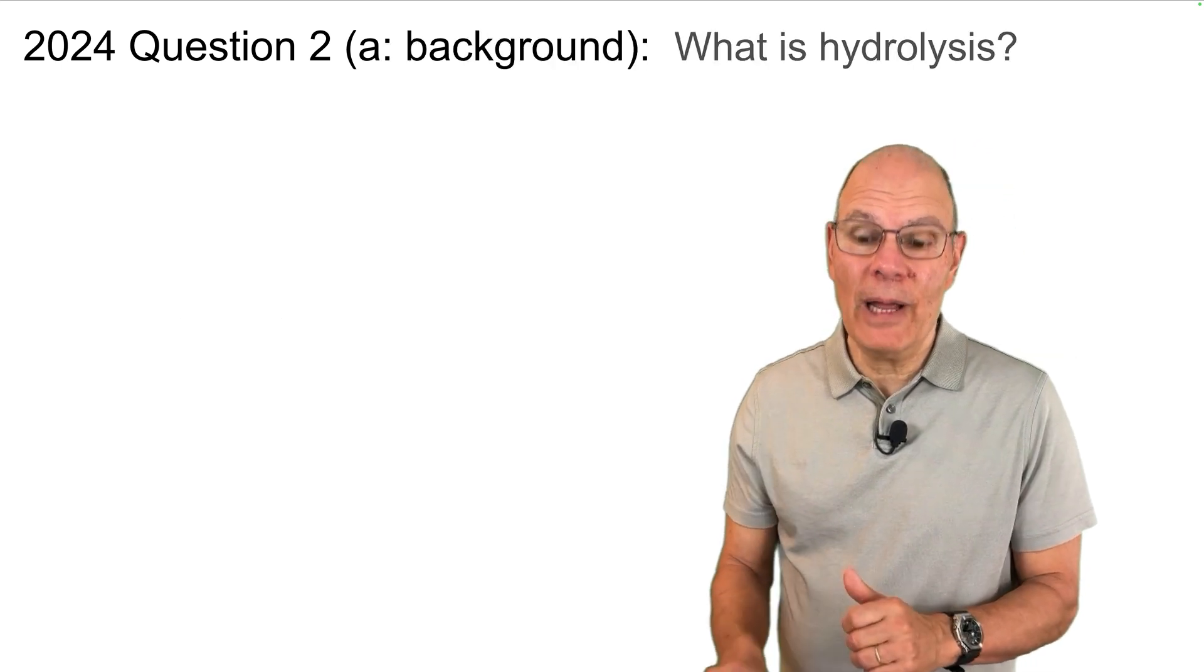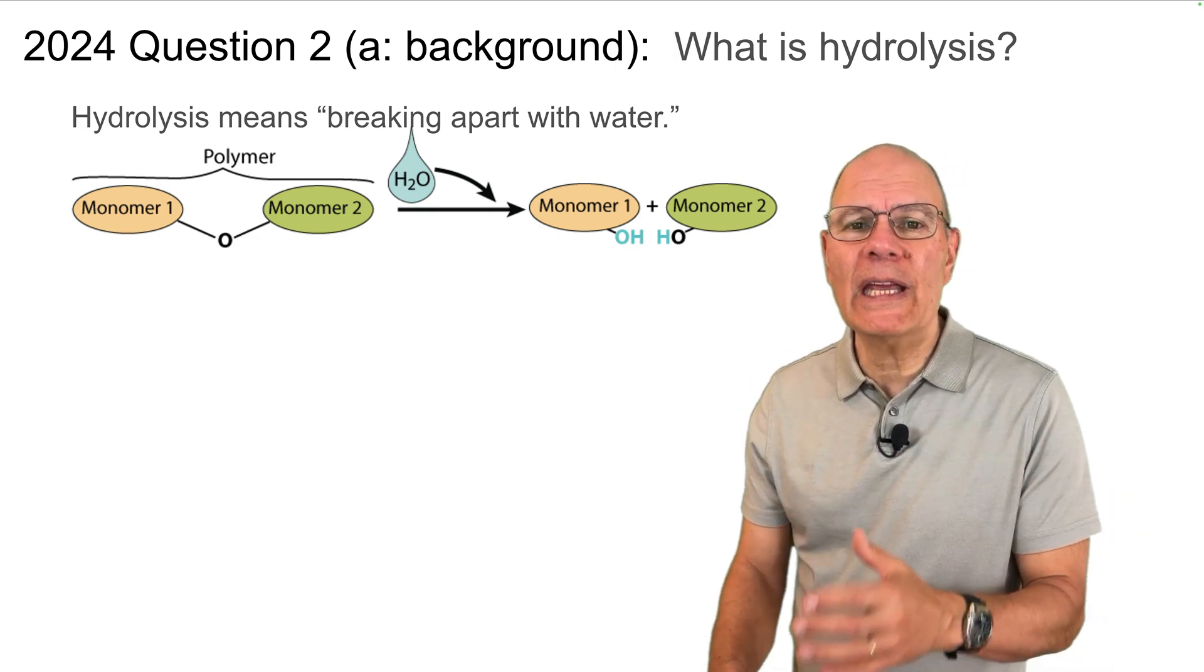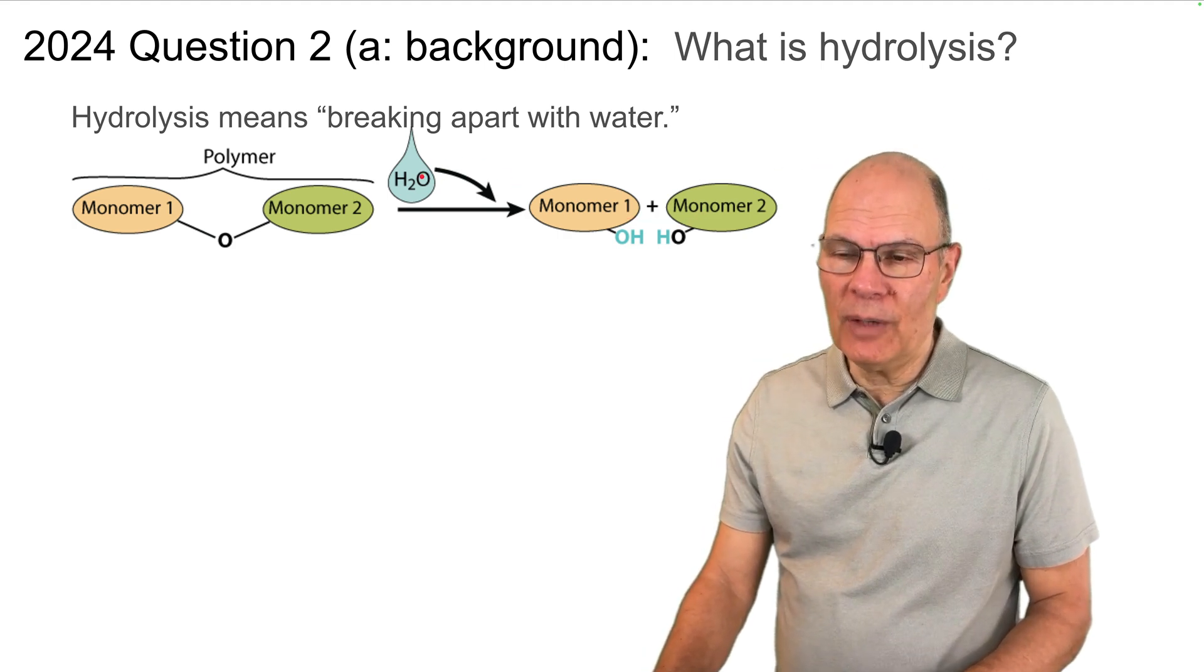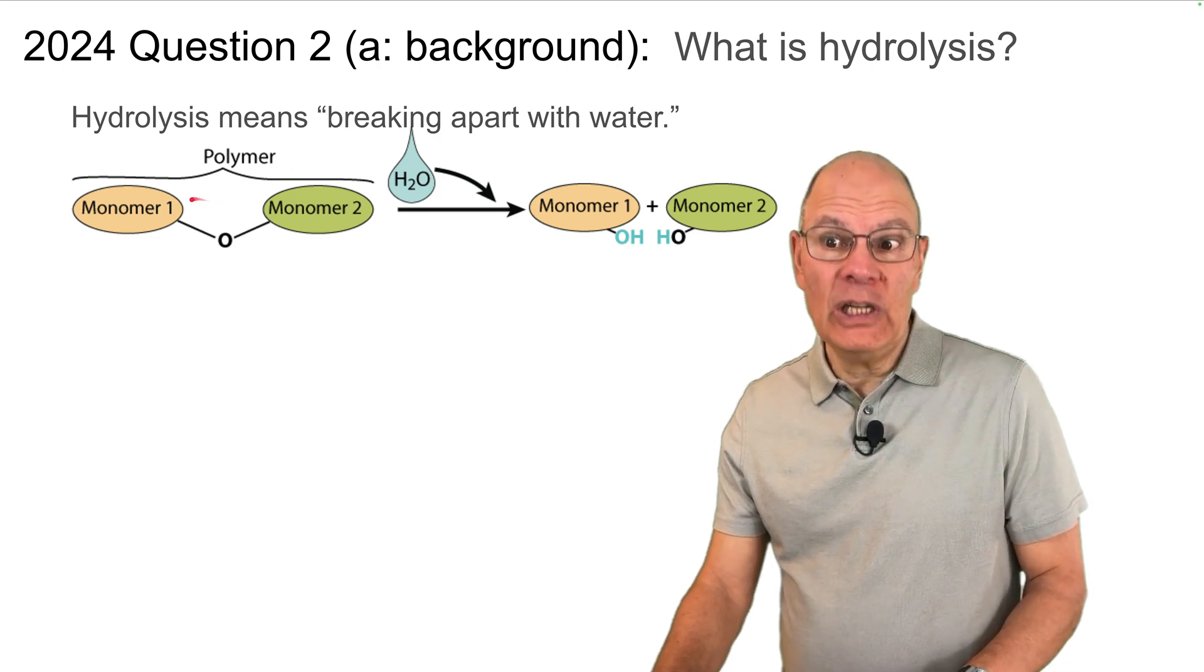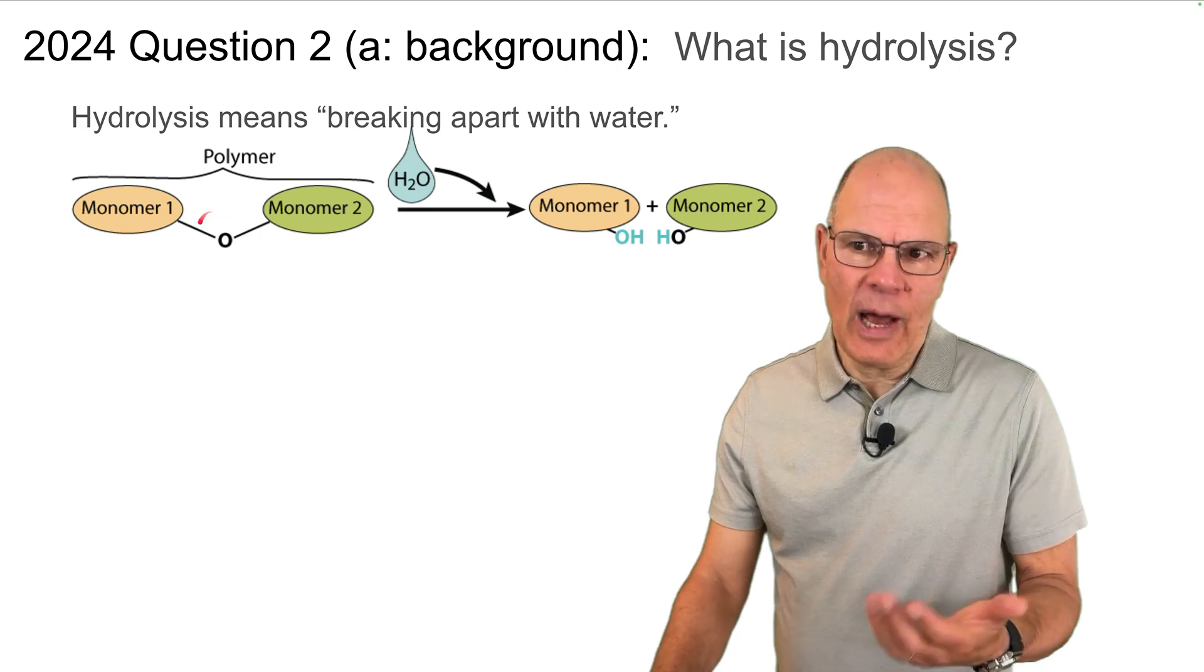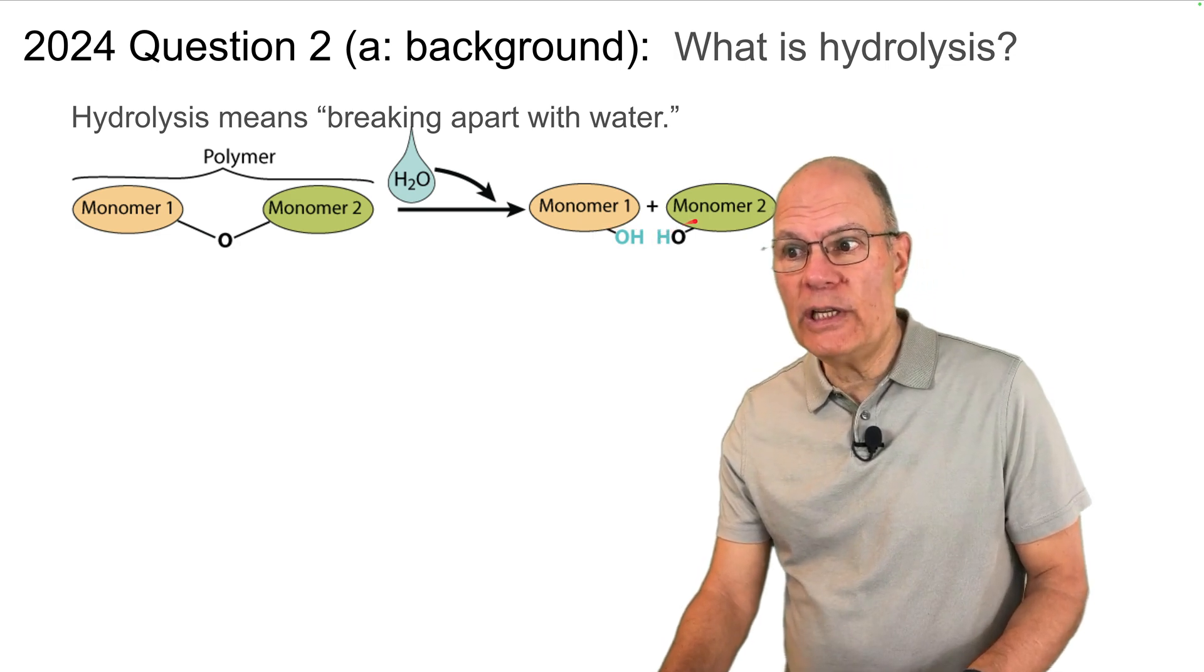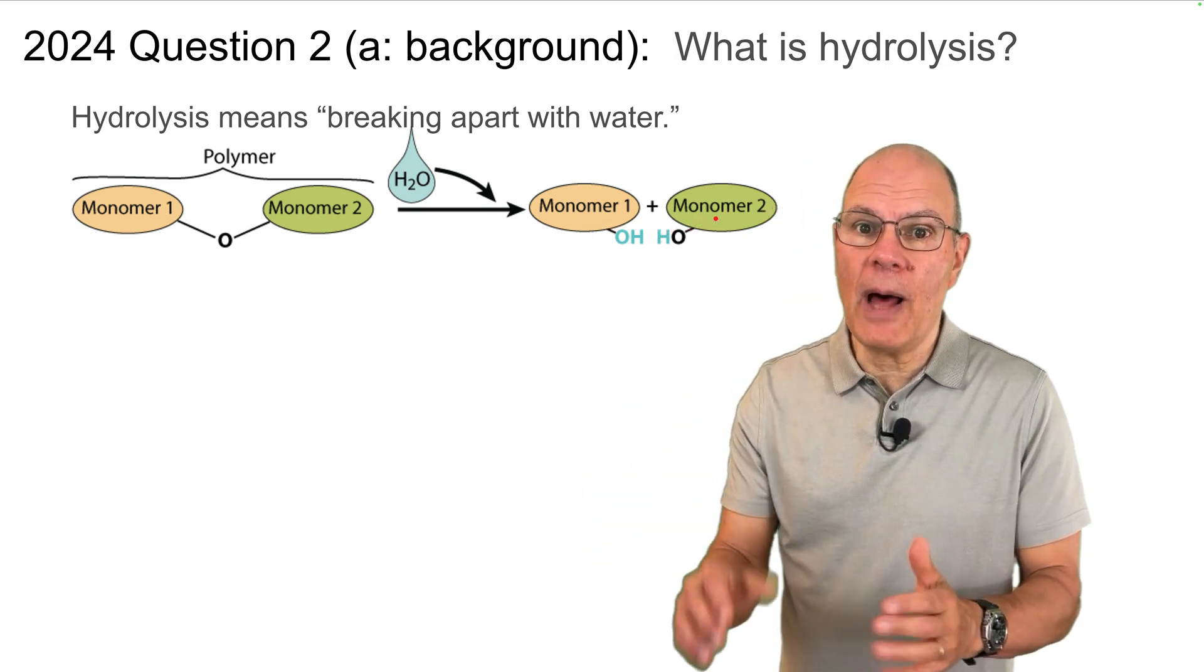Here's some background about this question. What is hydrolysis? Hydrolysis means breaking apart with water. What happens is that an enzyme will take a water molecule and jam it in between the constituent monomers that make up a polymer. When that happens, that water molecule will be broken apart. Part of the water molecule will go into one monomer, part of it will go into the other monomer, and the monomers will now be free. They won't be part of the polymer anymore.